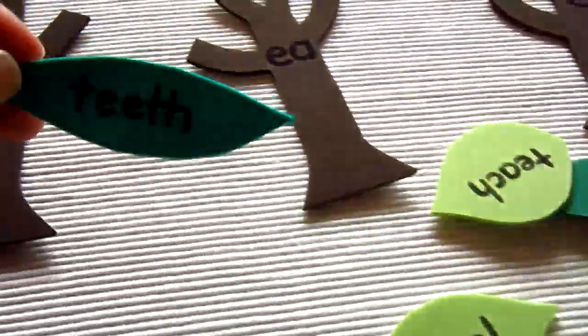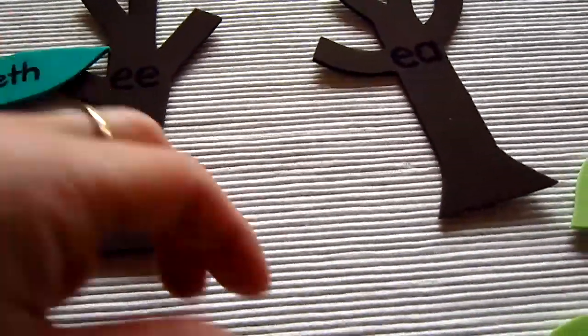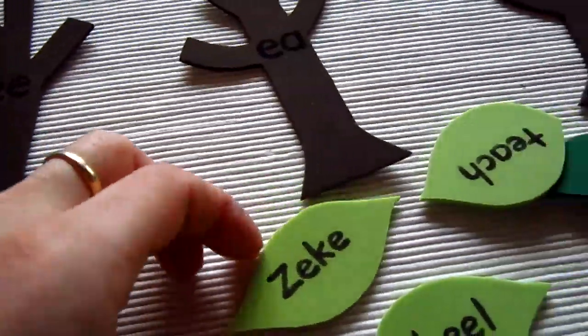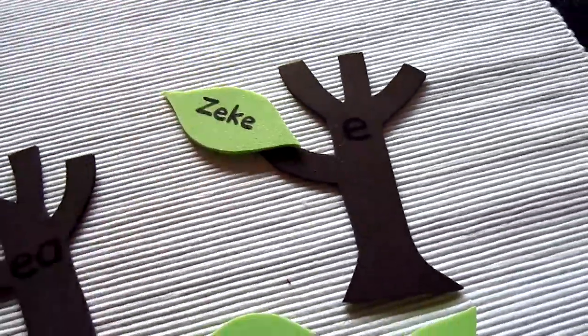Teeth. So the kid just has to read it and put it on the right branch, zeek, on the right tree trunk.